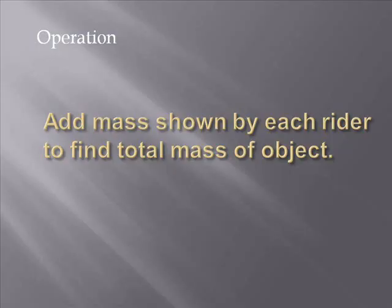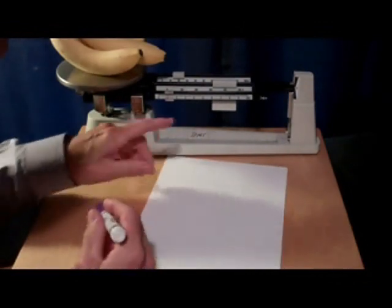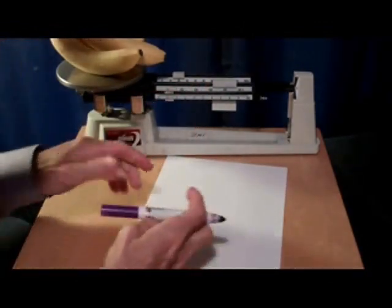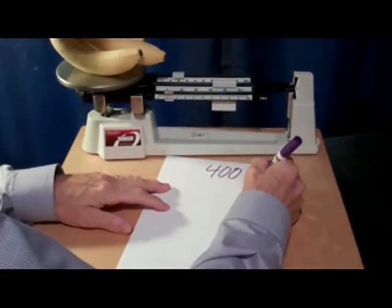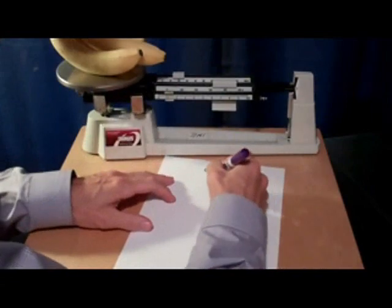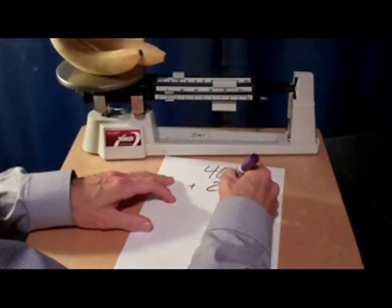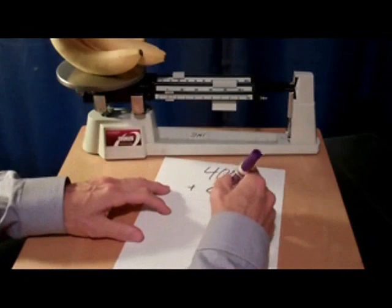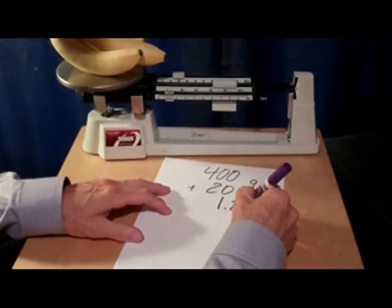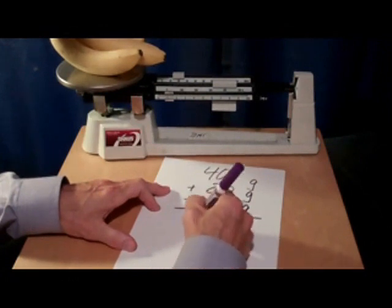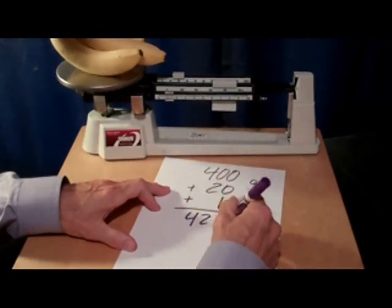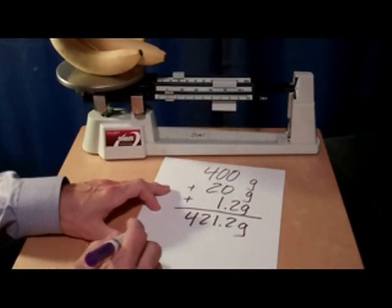The final step is to add the mass shown by each of the riders to find a total mass of the object. The final step involves reading each of the riders and summing them up. 400 grams for the big rider plus 20 grams for the medium rider plus 1.2 grams for the small rider makes a total of 421.2 grams of bananas.